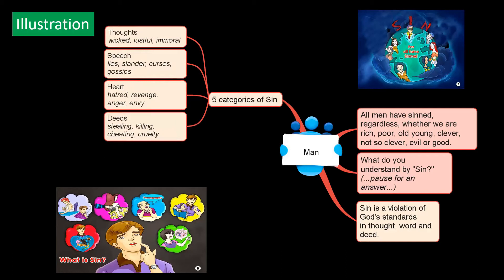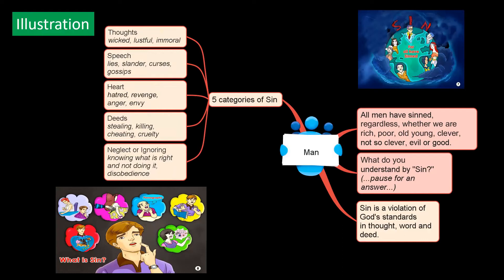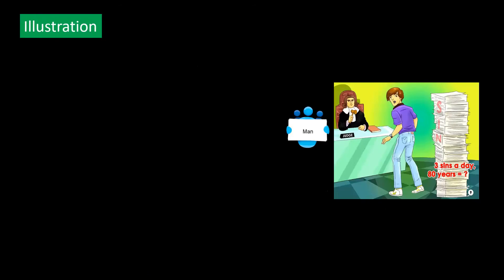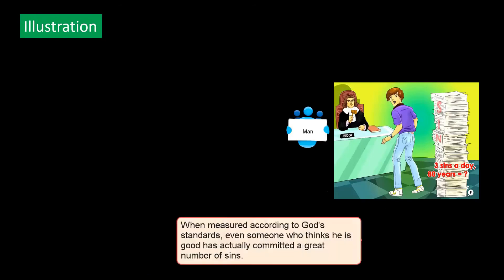Or we could actually commit deeds like stealing, killing and cheating and acts of cruelty. And the fifth category is we could either neglect or ignore knowing what is right but not doing it, including disobedience to God's commands. So there are five categories of sin. That means to say, when measured according to God's standards, even someone who thinks he is good has actually committed a great number of sins.